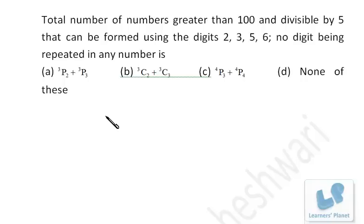Now if we don't want the repetition, that means at max four digit numbers can be formed, and we have to make the number greater than 100, that means three digit and four digit numbers we have to form. And if the number is divisible by 5, that means among these digits the unit place should be occupied by 5 only.